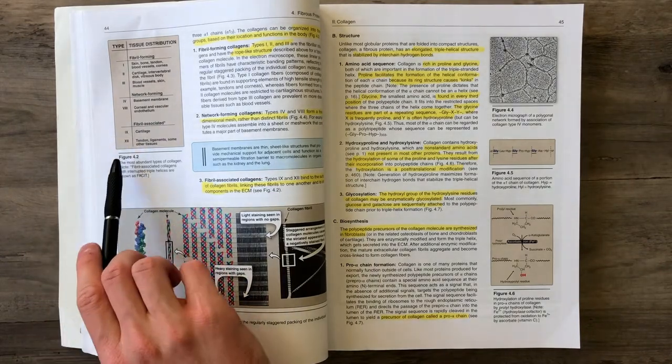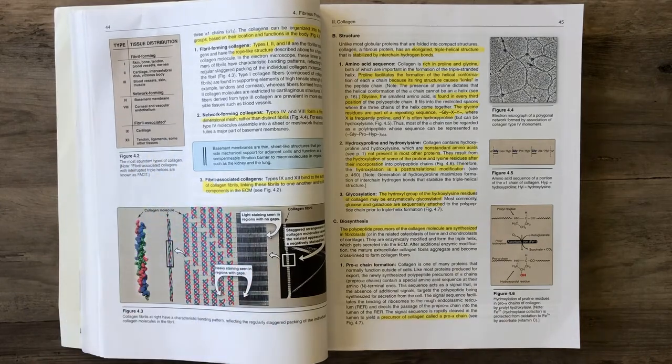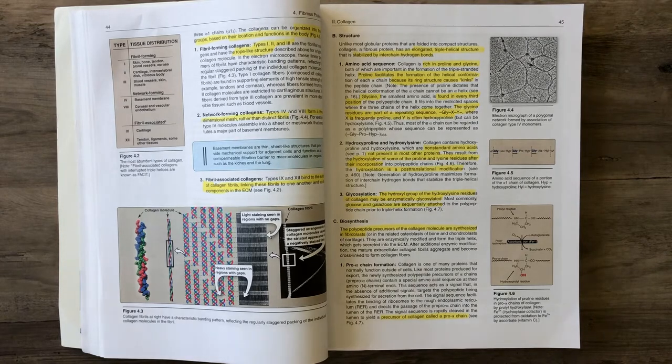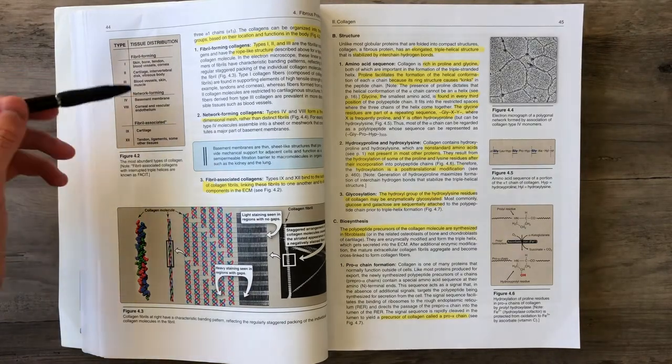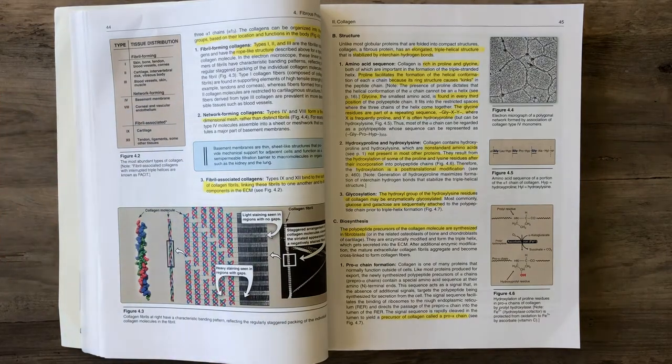Lastly, we have fibrillar associated collagens that link the collagen fibrils together. This includes types 9 and 12. Type 9 for cartilage, 12 for tendons, ligaments, and some other tissues. They're more connecting those fibrils together.